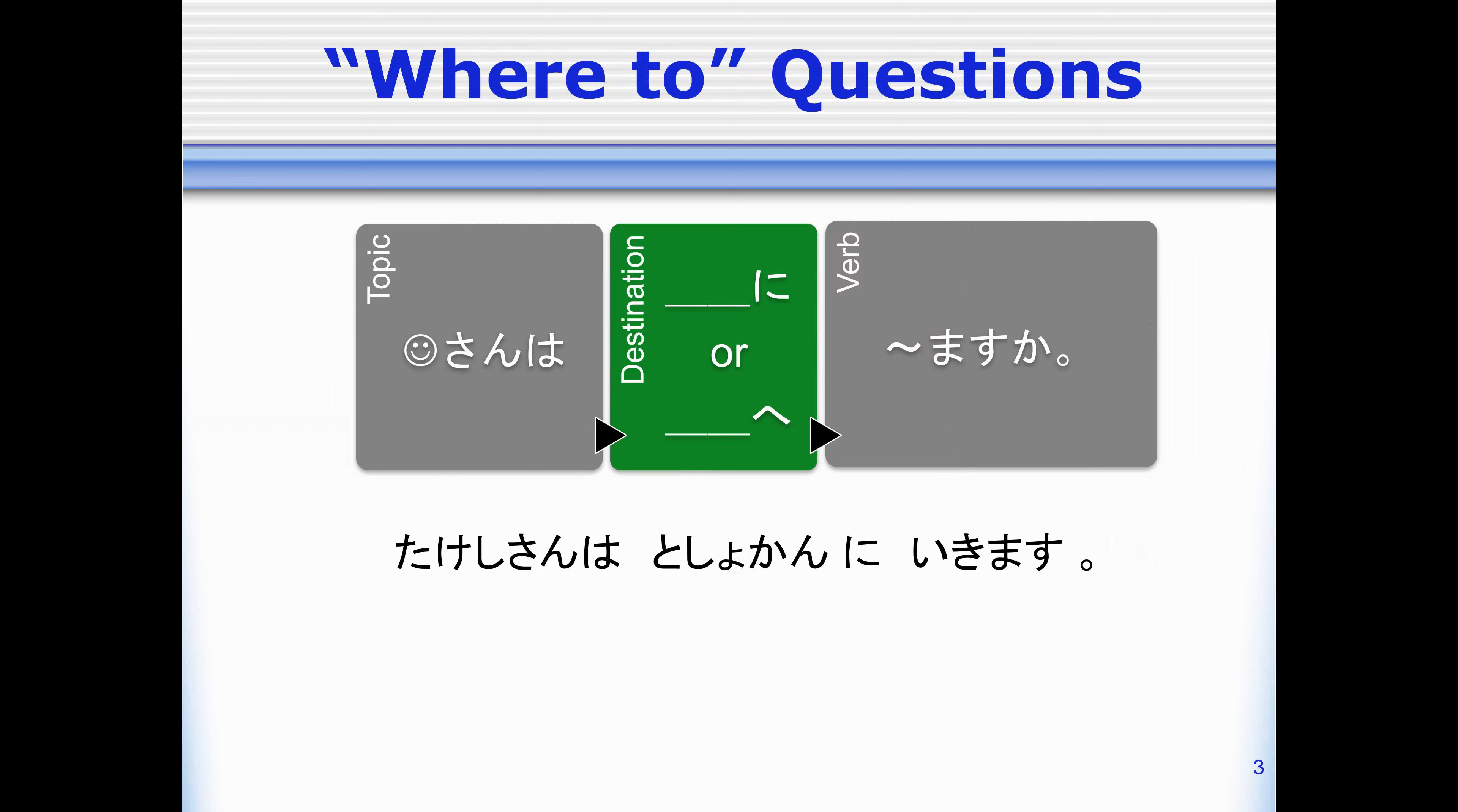We can also ask someone where they go. So in a normal sentence, we have like Takeshi-san wa toshokan ni ikimasu. Takeshi-san goes to the library. If I want to ask where Takeshi-san goes, I'll have to replace toshokan with a question word. What question word do I use to mean where?